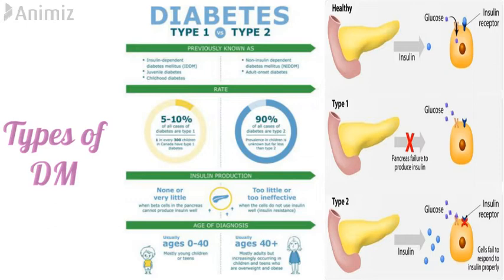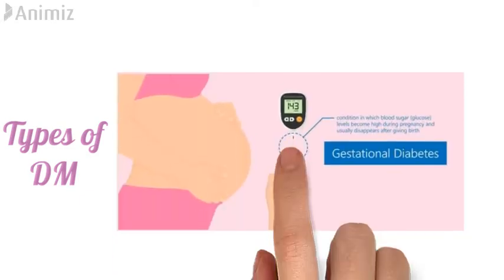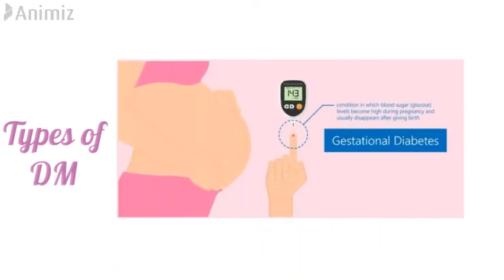Type 2 diabetes is known as non-insulin-dependent diabetes mellitus or adult onset diabetes, as most cases occur in people over 40 years of age, and it accounts for 90% of all diabetes cases. In Type 2, beta cells produce enough insulin but body cells fail to respond to it properly — something goes wrong with insulin receptor binding or the opening of the GLUT4 transporter. Apart from these two, there is also gestational diabetes, in which blood sugar levels are high during pregnancy but usually disappear after giving birth.